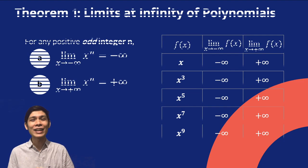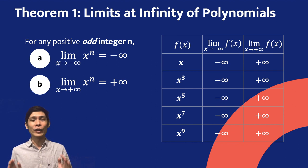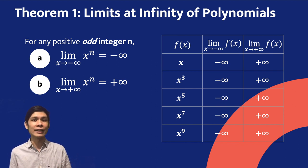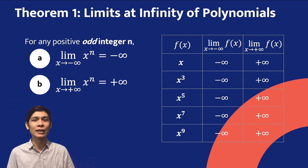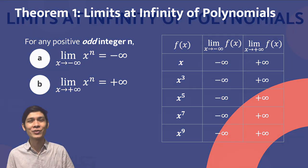After analyzing the left-hand limit and right-hand limit of the given graphs, we conclude that for any positive odd integer n, the left-hand limit is equal to negative infinity, whereas the right-hand limit is equal to positive infinity.